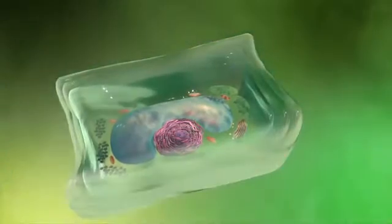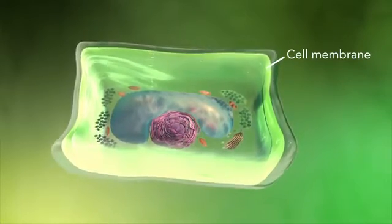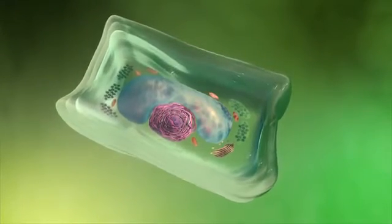Plant cells also have a cell wall outside of their cell membranes that shape, support, and protect the plant cell. Animal cells never have a cell wall.